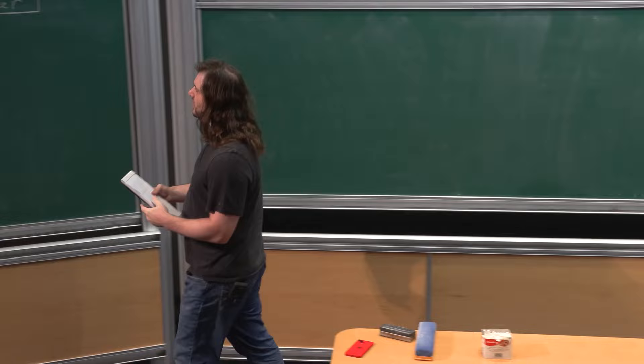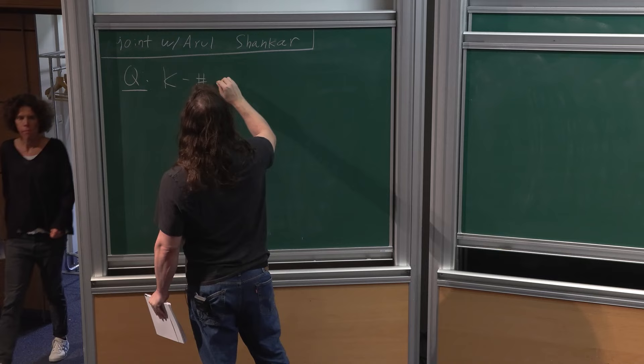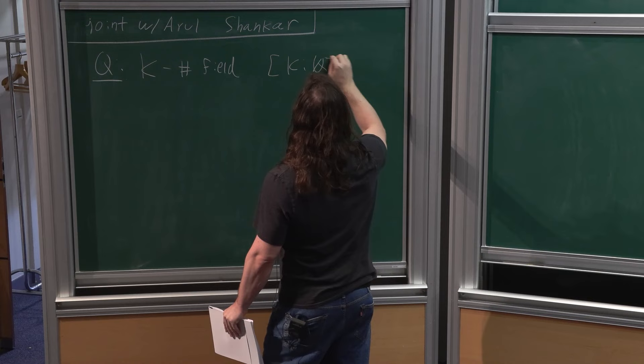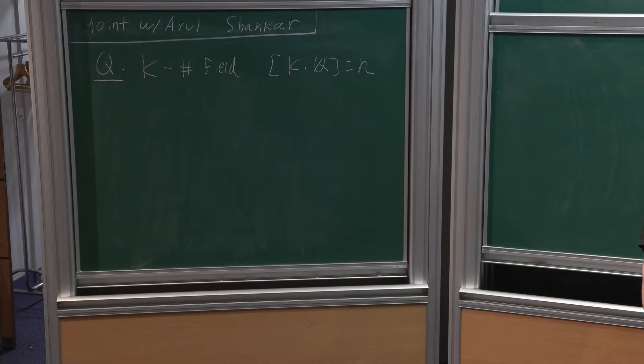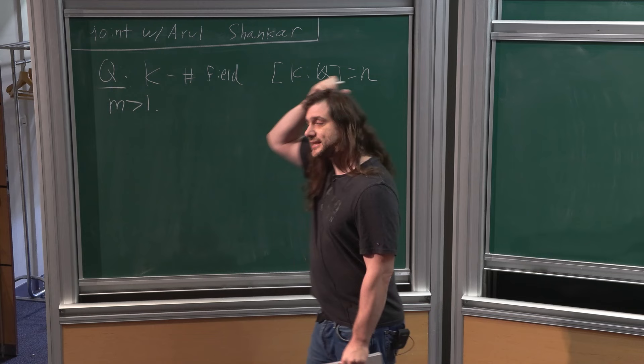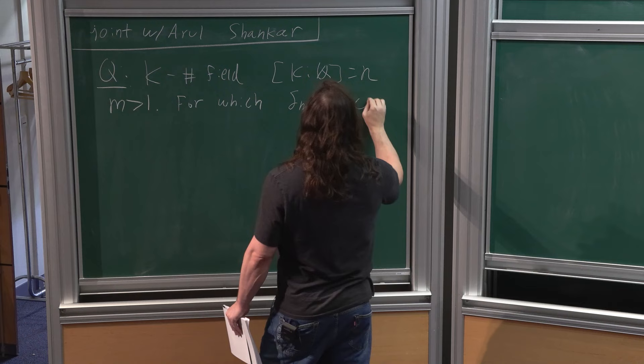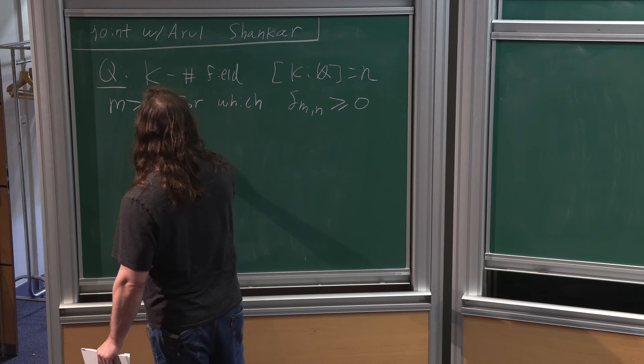Everything I talk about is joint with Arul Shankar, and the central question I want to discuss is quite simple to state. We let K be a number field of some degree N. We're going to think of N as a fixed number throughout the talk—N is not going to be growing or changing. And we're going to take another positive integer M, that's at least one. The question is, for which non-negative constants δ_MN do you have the following inequality?